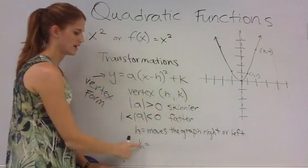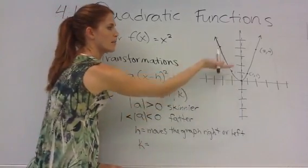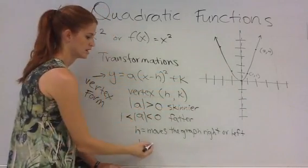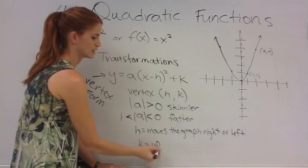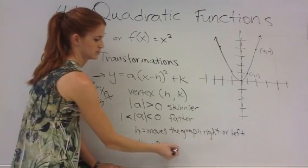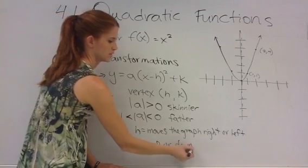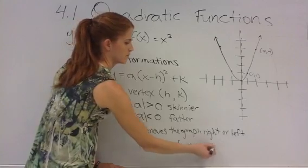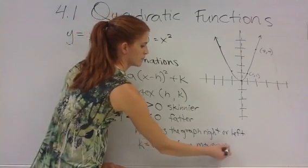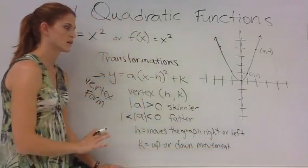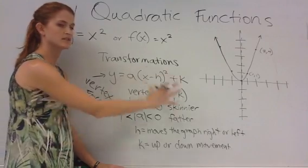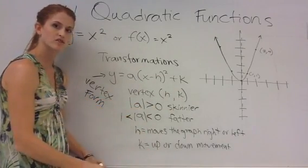Lastly, we have k. k moves the graph up and down. It just does it in the way you would expect. So this is how our graph is going to move based on the different transformations that we have.